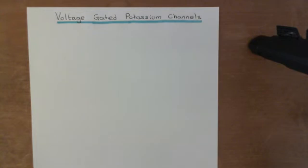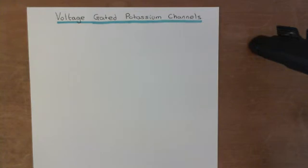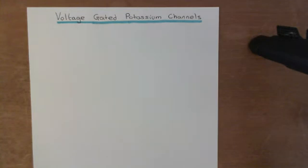Then we will look at the mechanisms underlying the selectivity of voltage-gated potassium channels. Voltage-gated potassium channels are very selective for potassium ions — they much prefer to let potassium ions move through rather than other cations such as sodium, magnesium, or calcium, which are also present in non-insignificant amounts in physiological fluids. We will explore that by looking at the selectivity filter and the mechanism of permeation of potassium ions through the selectivity filter.